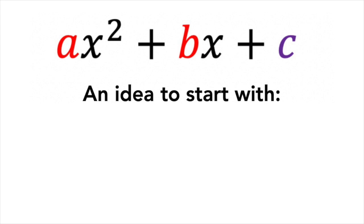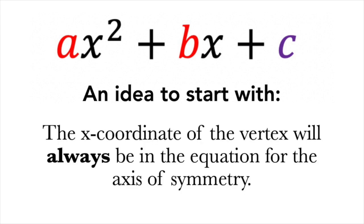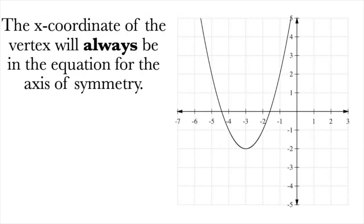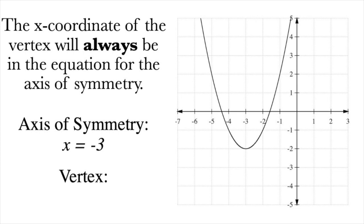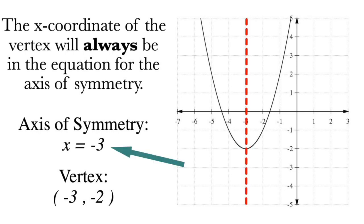One idea I want to start out with is that the x-coordinate of the vertex will always be in the equation for the axis of symmetry. Here's a quadratic I found on Google. If we find the axis of symmetry — that line we can fold over and match up — that would be x equals negative three. And the vertex, that minimum point at the bottom, is negative three, negative two. You'll see that the x-coordinate of the vertex at negative three is the same value as the axis of symmetry, x equals negative three.